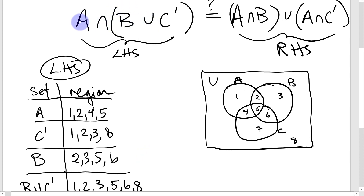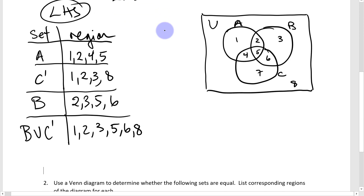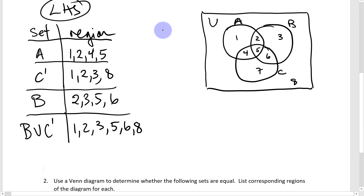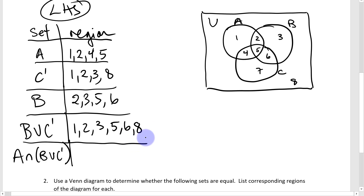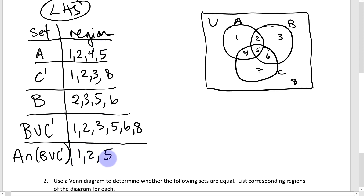Now for the left-hand side: A∩(B∪C'). Intersection means only those regions in both sets. Starting with the shorter list — A is regions 1, 2, 4, 5 — I check which appear in B∪C'. Region 1 is in both, 2 is in both, 4 is not, and 5 is in both. So the left-hand side corresponds to regions 1, 2, and 5.